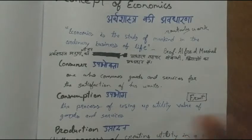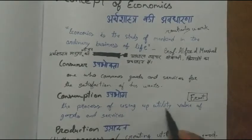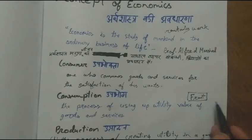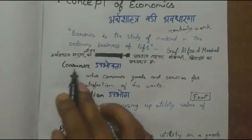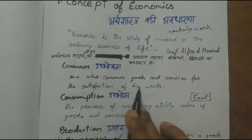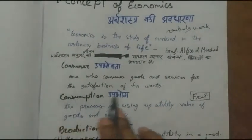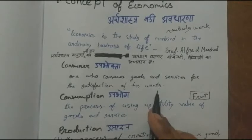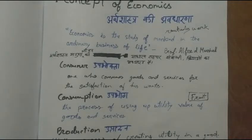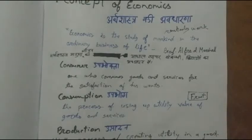Once we have eaten the fruit, its utility has ended — there is no more utility. When you have completely eaten the fruit, there will be no further use of it. Now, a consumer is one person who consumes goods and services for the satisfaction of his wants. If we eat this fruit, we are a consumer.